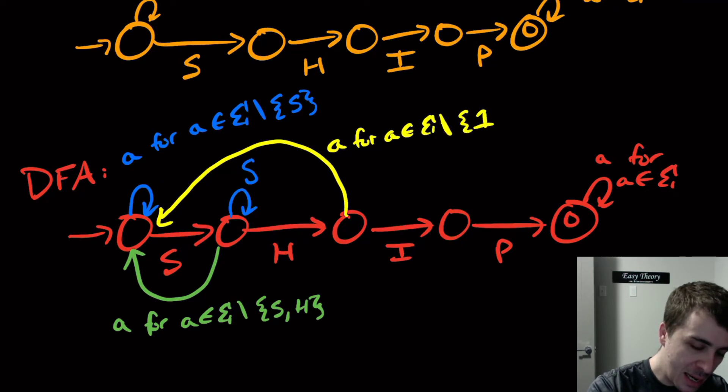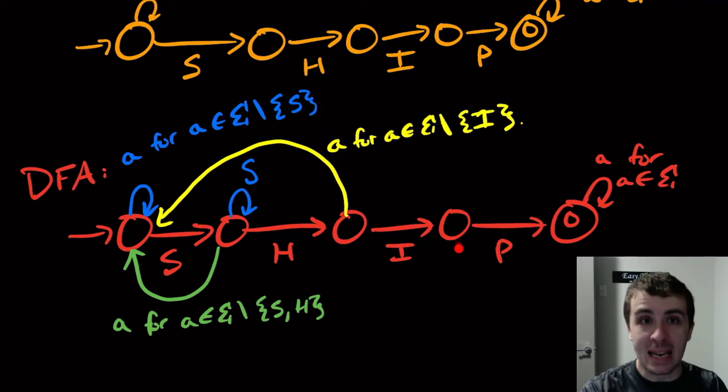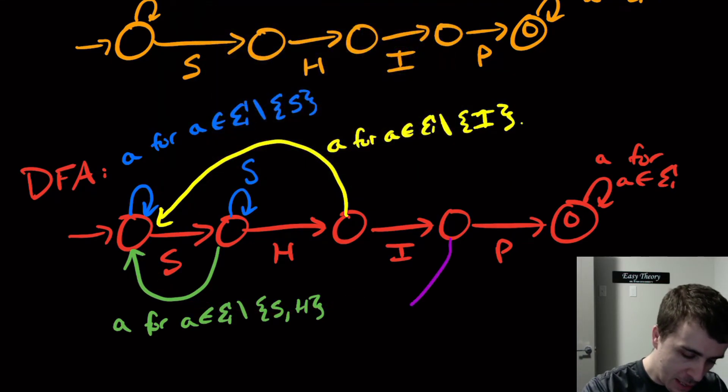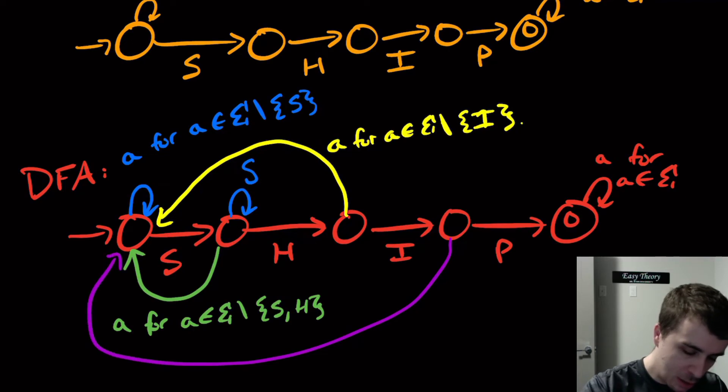And then we're going to do the same thing right here, because if we self-loop here, then that means we saw S H I and then maybe some not-so-nice letters there. But anything other than P, we should come back here, so we're going to have a purple transition which is going to be a for a in Sigma set minus P.